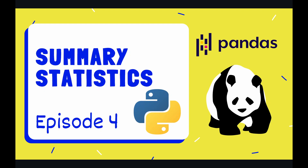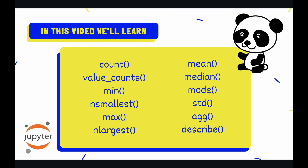Hey coders and welcome to episode four of our pandas playlist. Today's episode is going to be somewhat more analytical in that we're going to be learning how to quickly calculate basic summary statistics for our pandas data frames and pandas series. There are a lot of different methods that you can use in order to calculate certain statistics, but in this video, we're going to look at a good strong subset of those, which are very frequently used in basically every single Python pandas project.